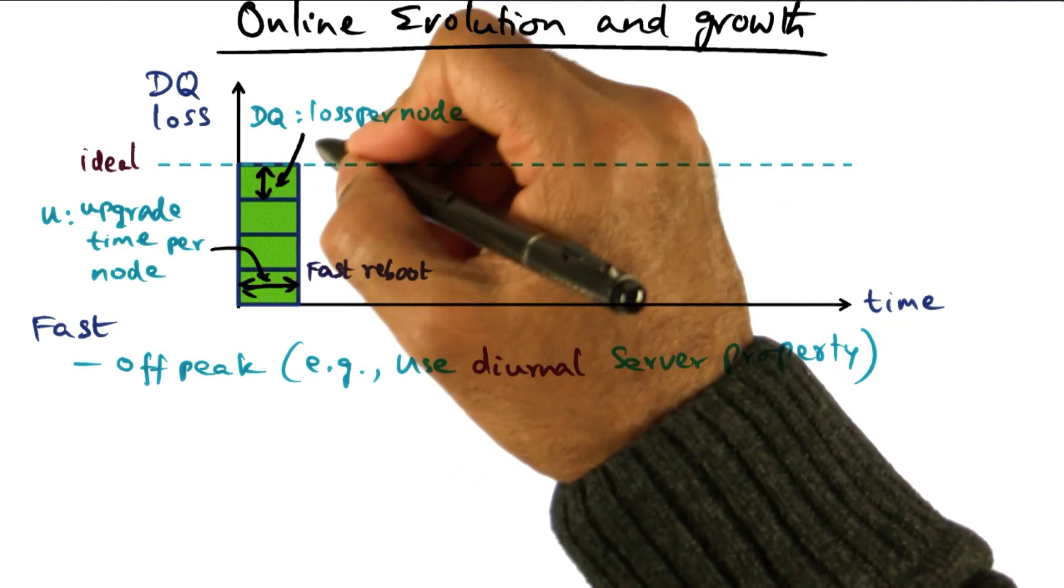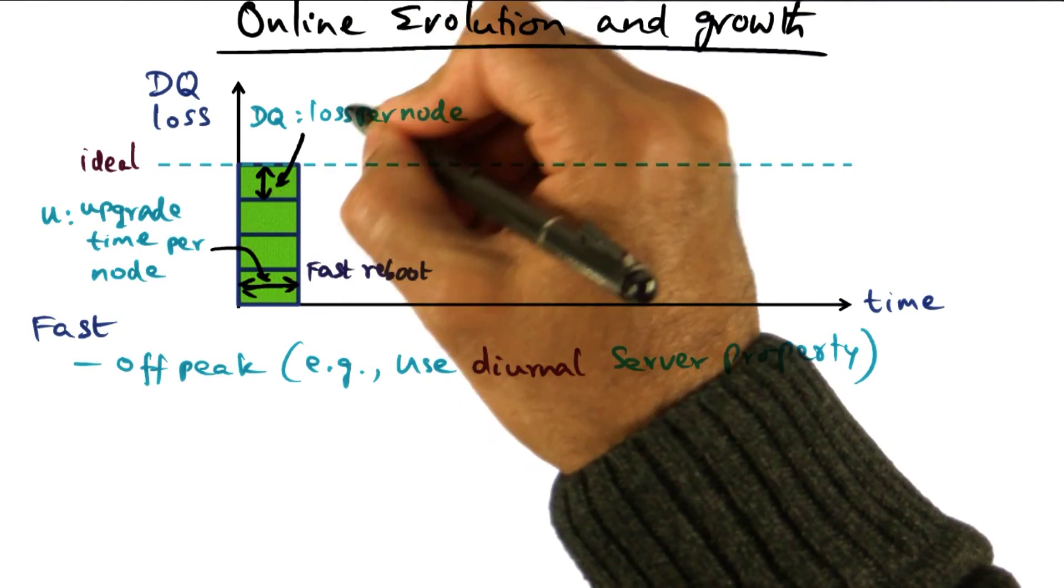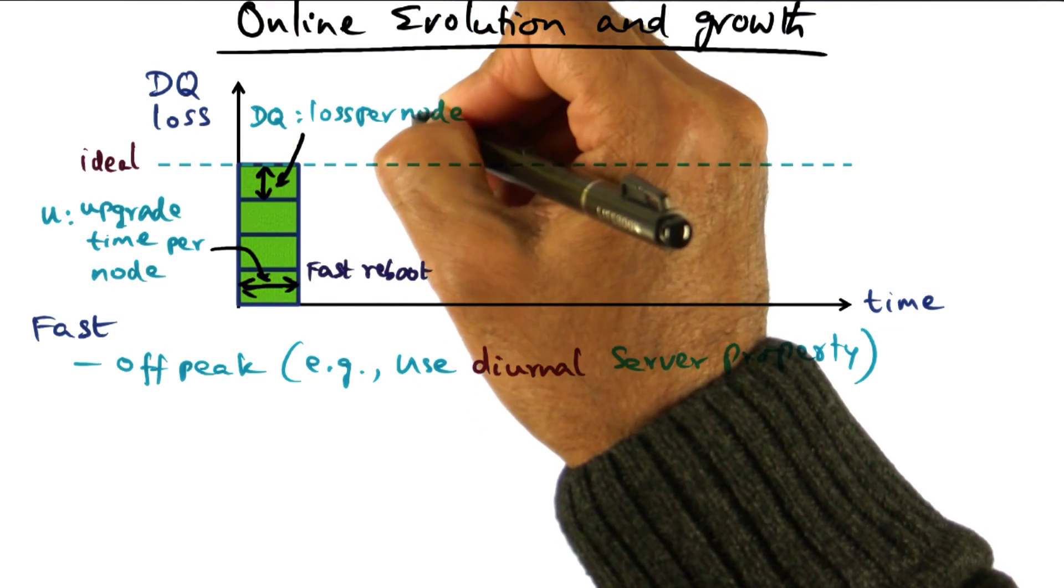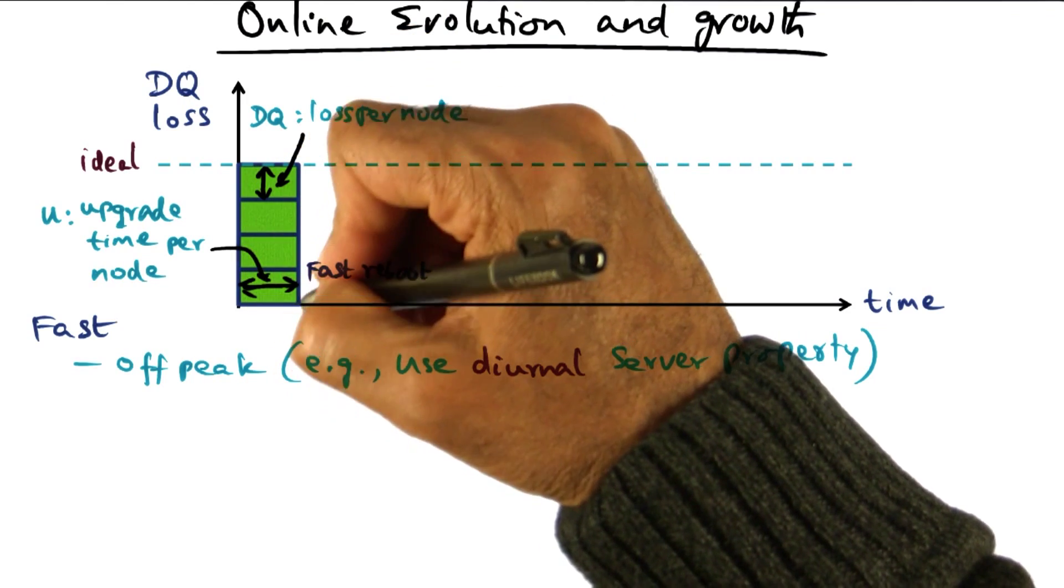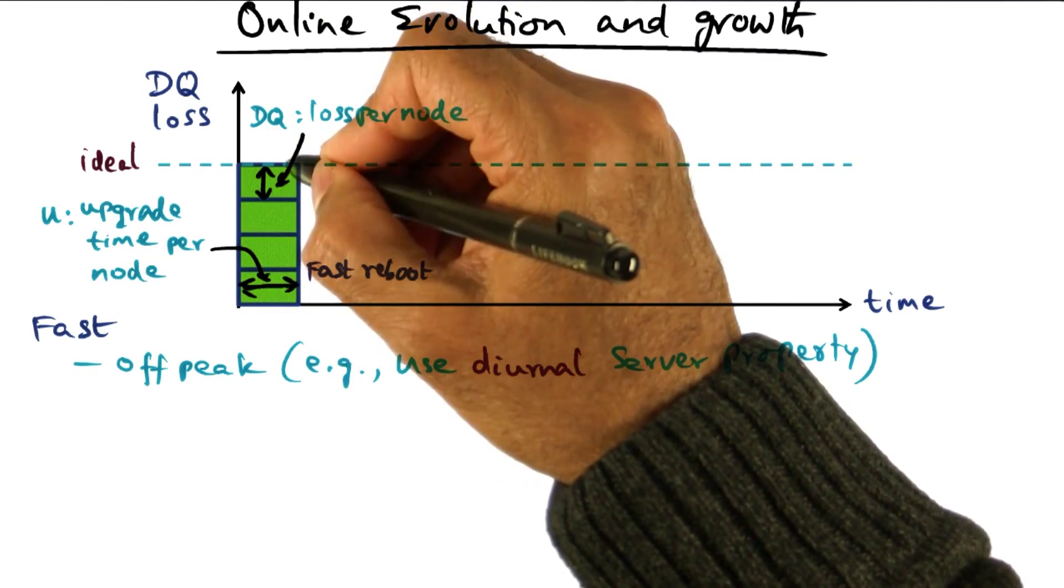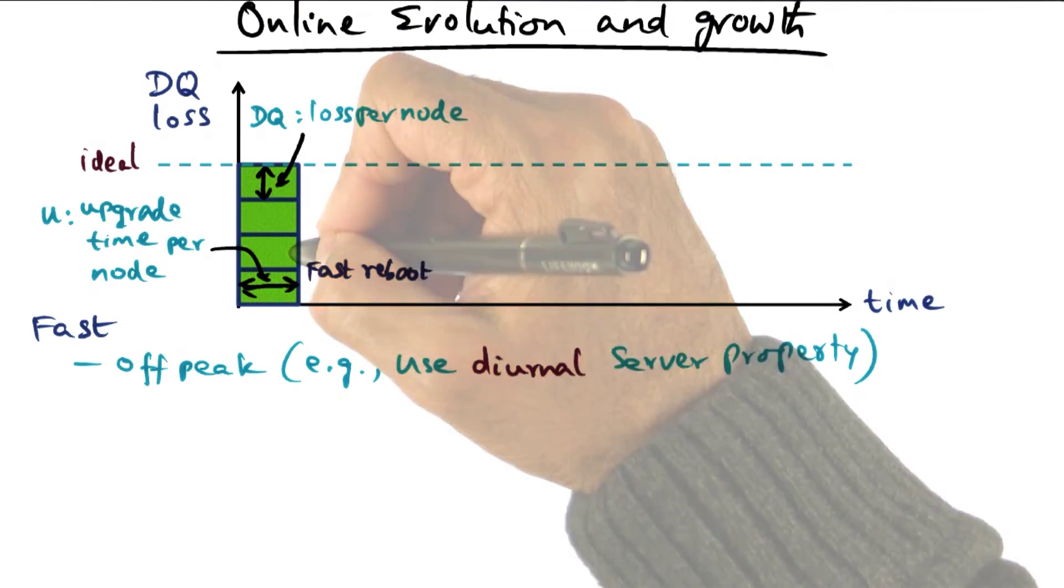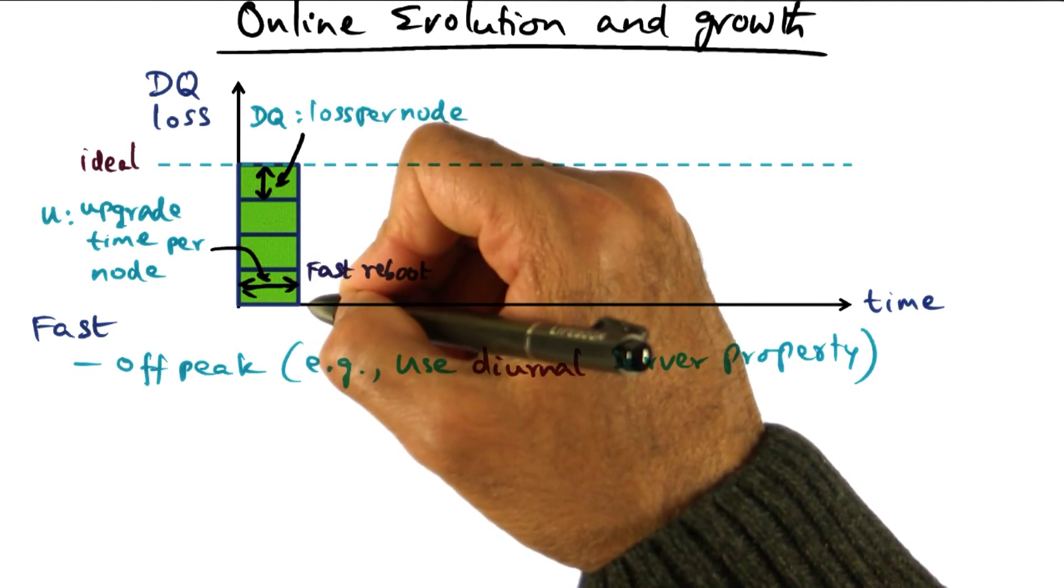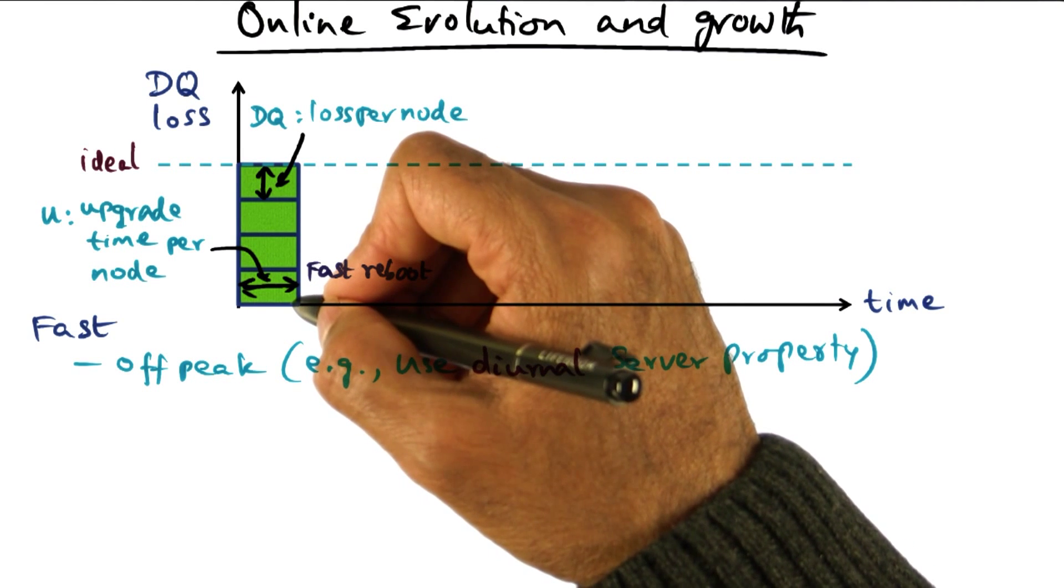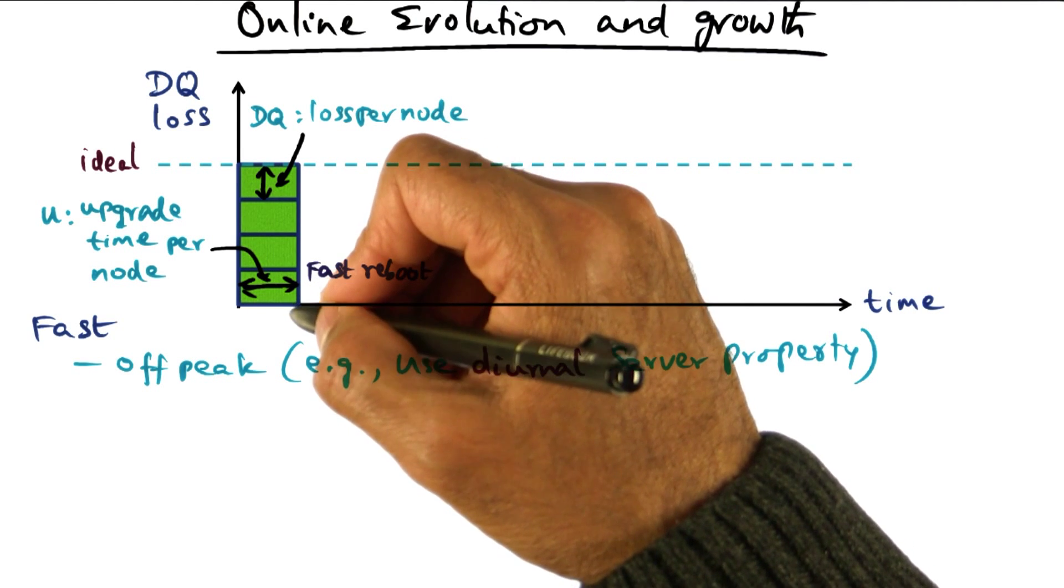In this figure, this segment that I'm showing you here is the DQ loss per node. And the total DQ loss is, of course, N times DQ, where N is the number of servers that are undergoing this fast reboot. So in other words, for U units of time, there is complete loss of DQ with fast reboot.